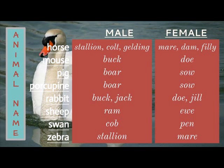A male mouse is a buck, a female mouse is a doe. A male pig is a boar, a female pig is a sow. A male porcupine is a boar, a female porcupine is a sow. A male rabbit is a buck or a jack, a female rabbit is a doe or a jill.